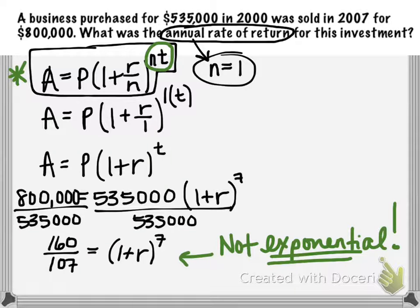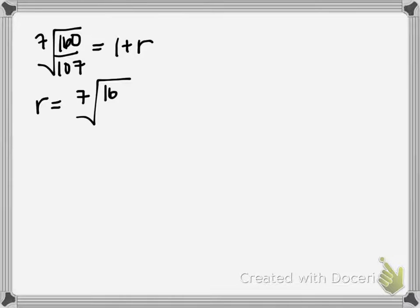We're trying to undo this quantity raised to the 7th power, so we'll take the 7th root of both sides. We get the 7th root of 160/107 = 1 + r. We can simply subtract 1, and we're in business. The 7th root of 160/107 minus 1 will be our r value, and then we'll use our calculator to get a decimal approximation.